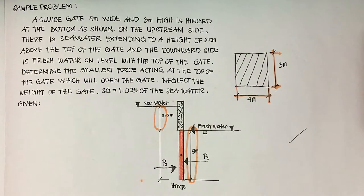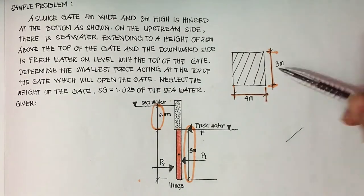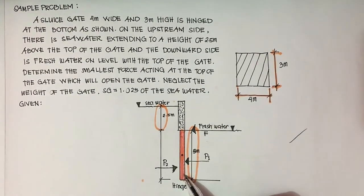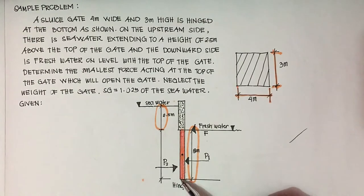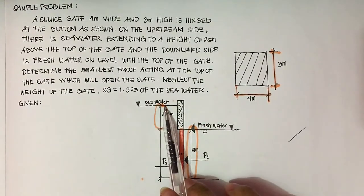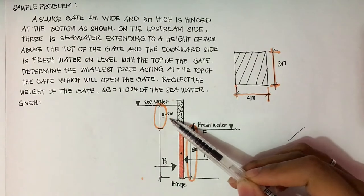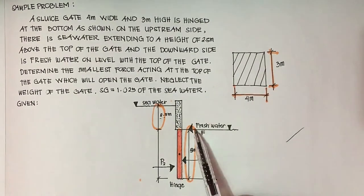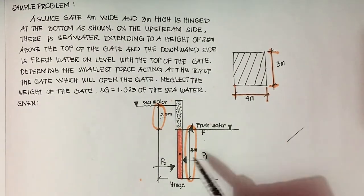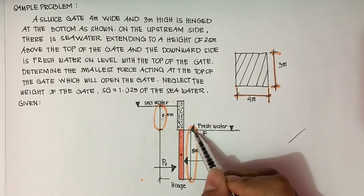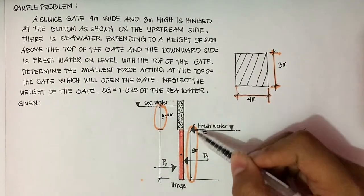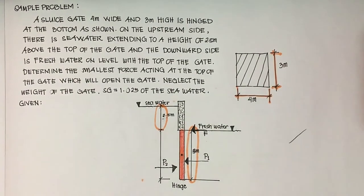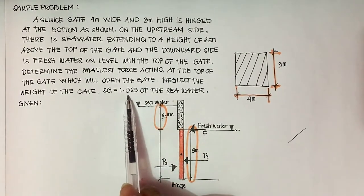Let's have an example. A sluice gate, 4 meters wide and 3 meters high, is hinged at the bottom as shown. On the upstream side, there is seawater extending to a height of 2.5 meters above the top of the gate, and on the downstream side is freshwater level with the top of the gate. Determine the smallest force acting at the top of the gate to open it. Neglect the weight of the gate. The specific gravity of seawater is 1.025.